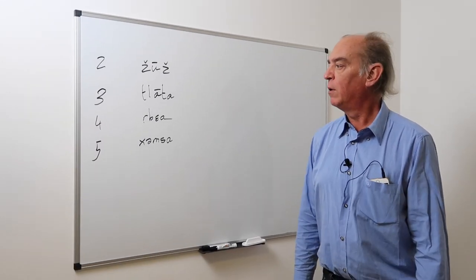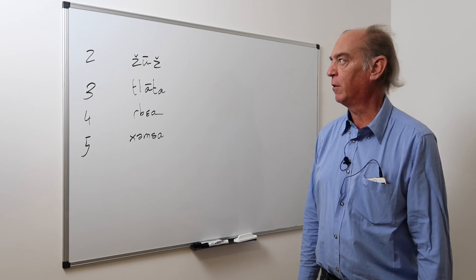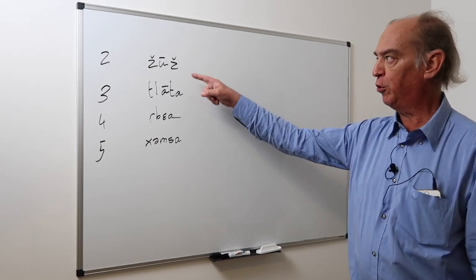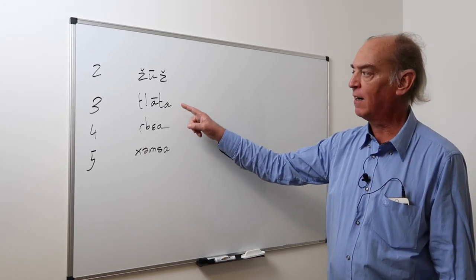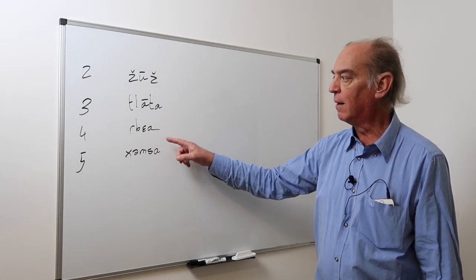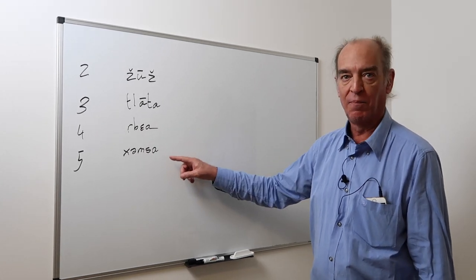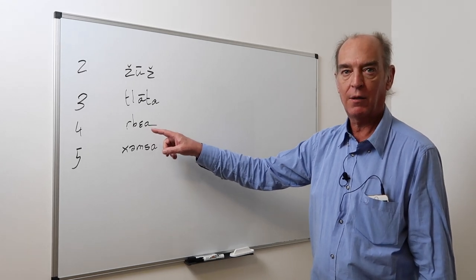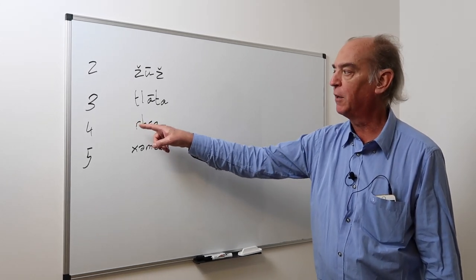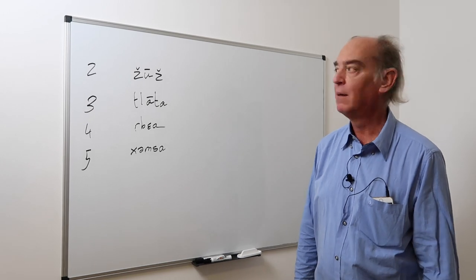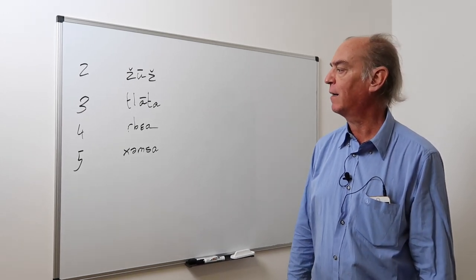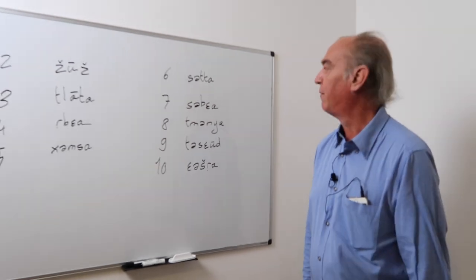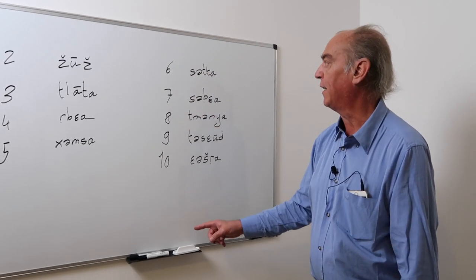Here you have from 2 to 5. We say juj, tslata, arrabaha, khumsa. Arrabaha may look difficult. If you have difficulty with it, you can begin with a little shwa. Arrabaha. Juj, tslata, arrabaha, khumsa.